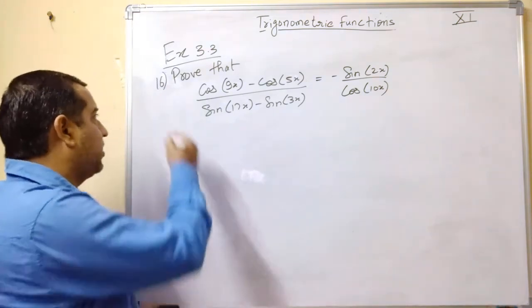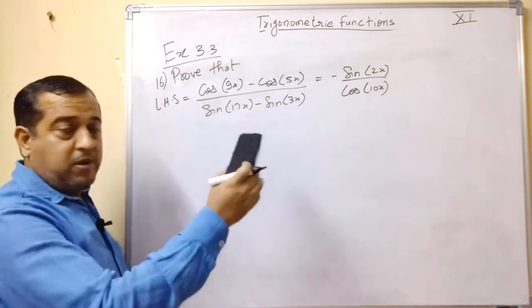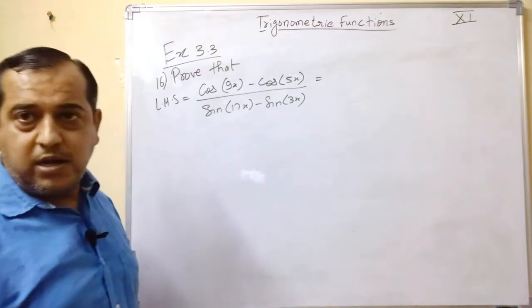Now what you have to do? You have to take the LHS. What you have to prove? Minus sin 2x upon cos 10x. Quite easy to prove.